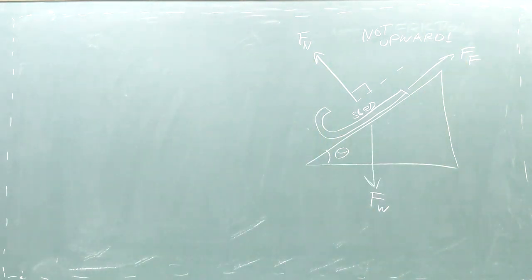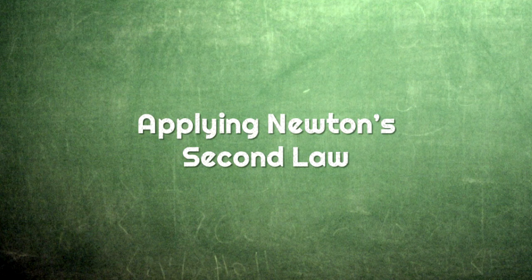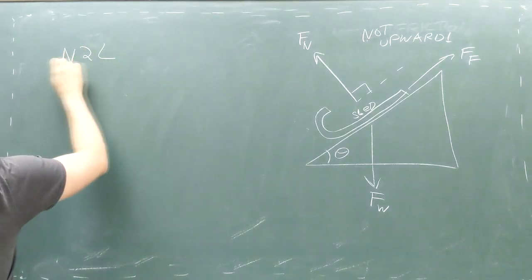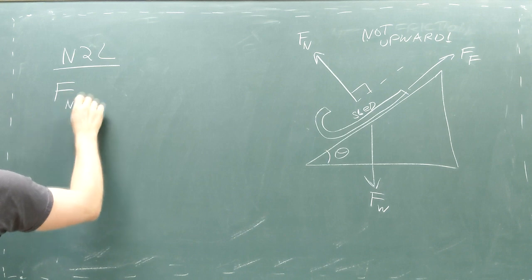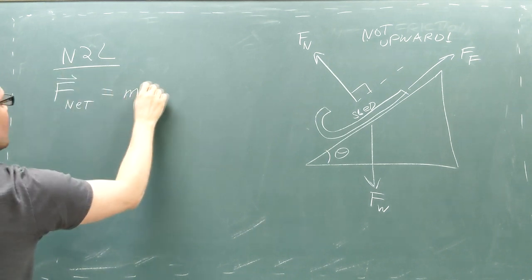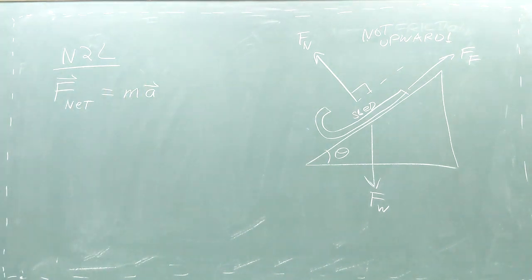Once we draw this free body diagram with these three forces, we're ready to apply Newton's Second Law. Newton's Second Law says that the total of all the force vectors on the sled is equal to the sled's acceleration vector multiplied by its mass.